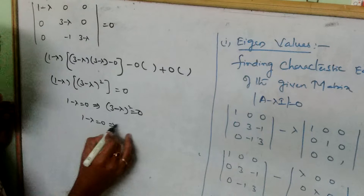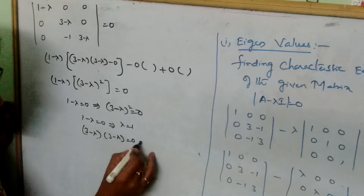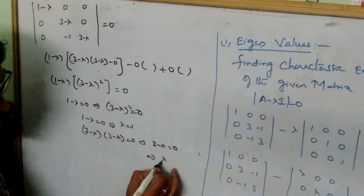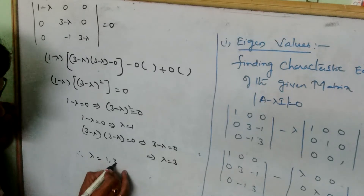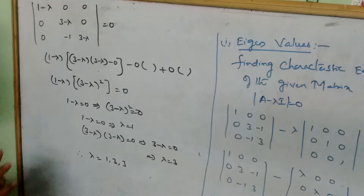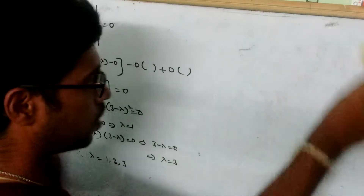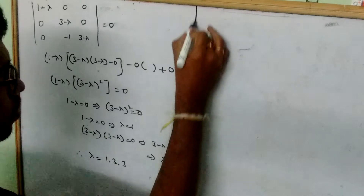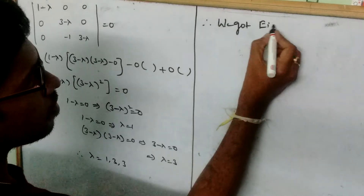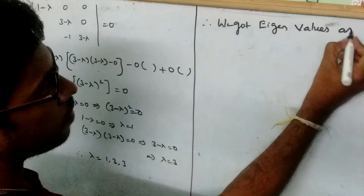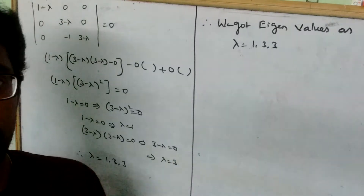Solving: 1 minus lambda equal to 0 gives lambda equal to 1. And (3 minus lambda) squared equal to 0 gives lambda equal to 3, repeated twice. Therefore, the eigenvalues are lambda equal to 1, 3, 3.